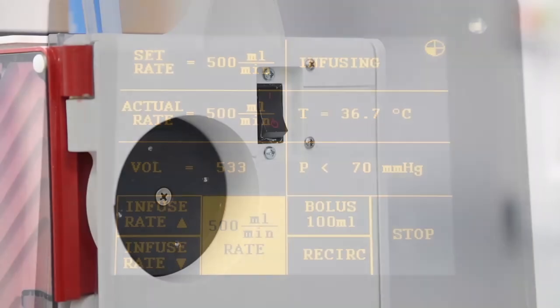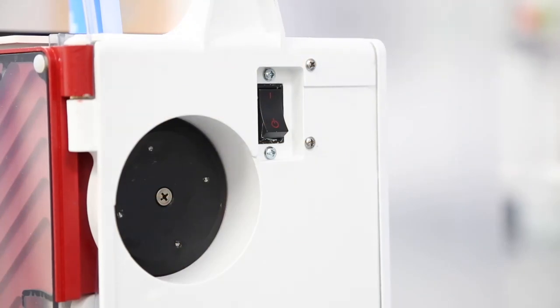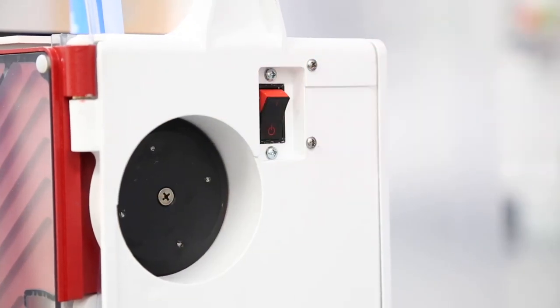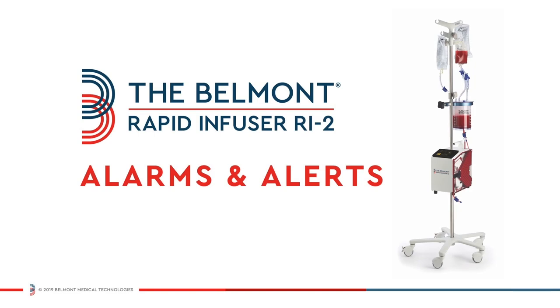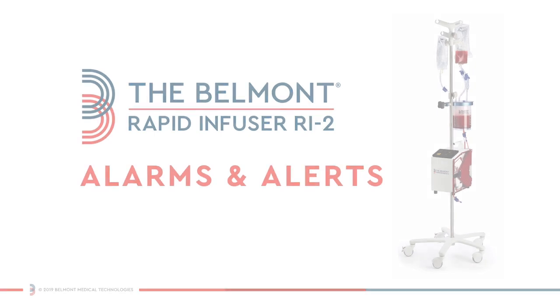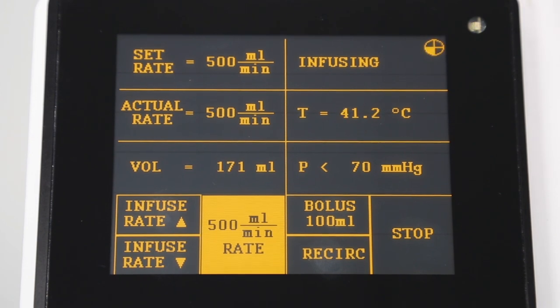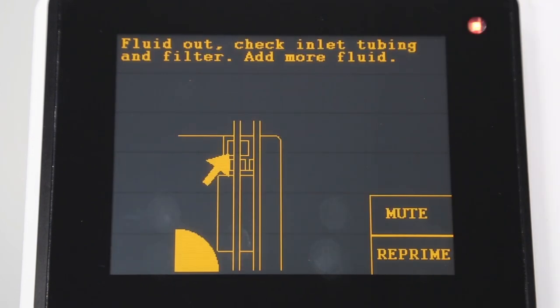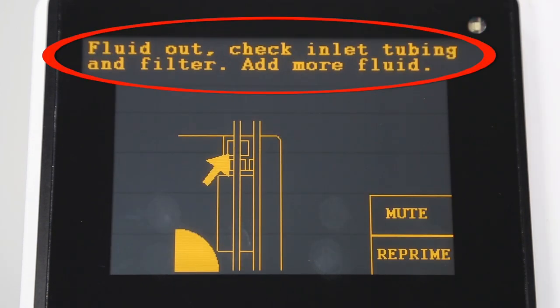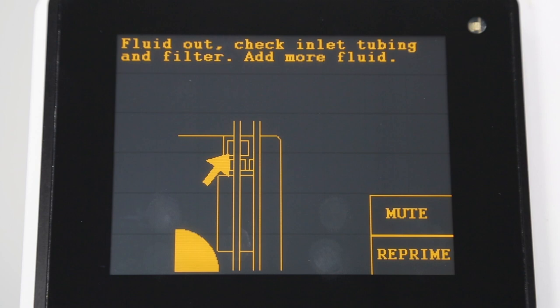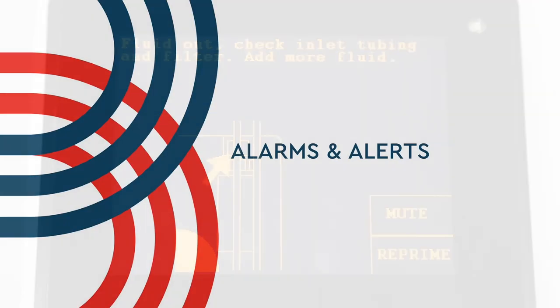At the end of the procedure, be sure to disconnect from the patient and power down by turning off the power switch. The Belmont Rapid Infuser RI2 will alert the user with an audible alarm if it senses a problem and will display instructions for corrected measures. To silence the alarm and return to normal operation, simply follow the instructions on the display. Here are some troubleshooting tips for the alarms you might experience.